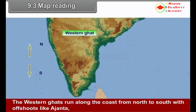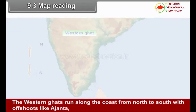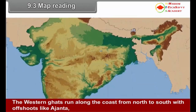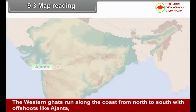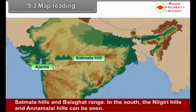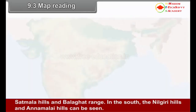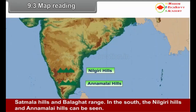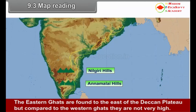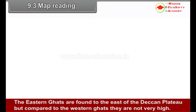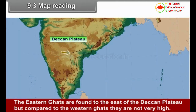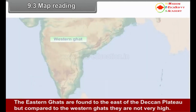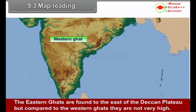The Western Ghats run along the coast from north to south with offshoots like Ajanta, Satmala hills and Balaghat range. In the south, the Nilgiri hills and the Annamalai hills can be seen. The Eastern Ghats are found to the east of the Deccan plateau, but compared to the Western Ghats, they are not very high.